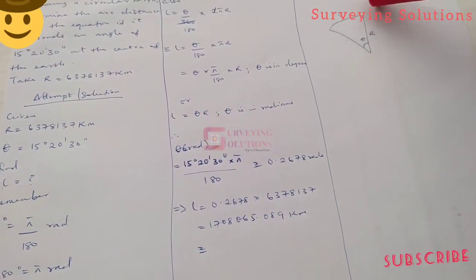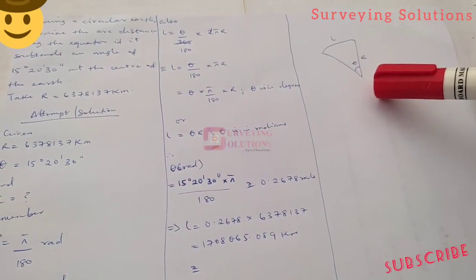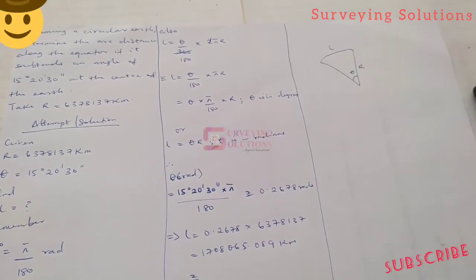This is a sketch indicating the radius of the earth, the angle subtended, and the arc length we want to determine.